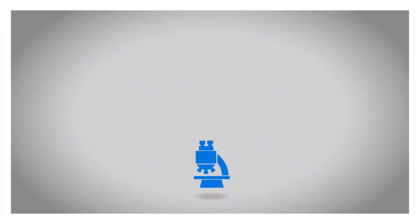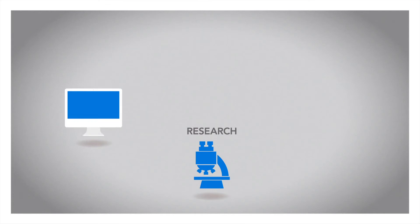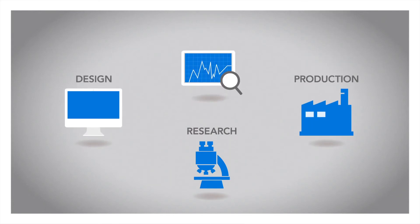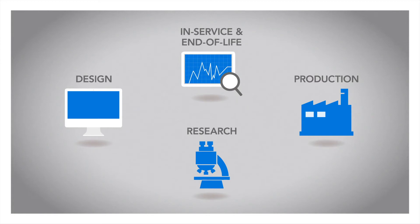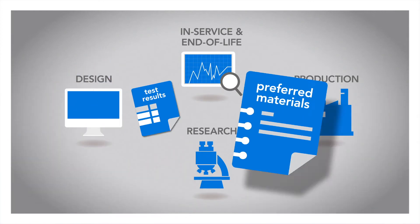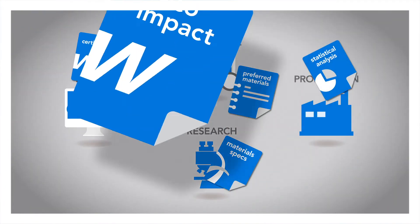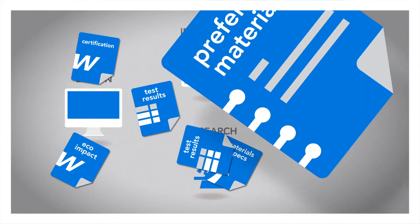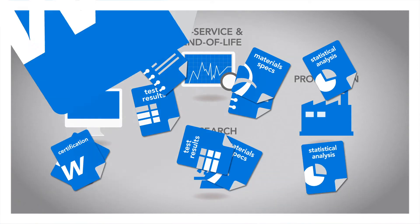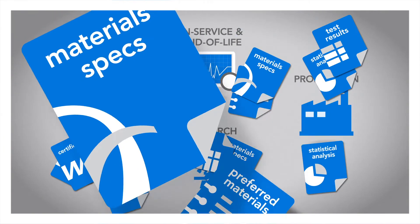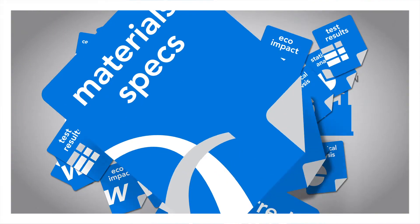Materials information is generated and used throughout an engineering company. This data is often complex, specialist, and hard to store in systems not designed for the purpose. So a company's in-house materials data usually ends up scattered across the organisation in diverse spreadsheets, file systems, databases, even filed away in hard copy.